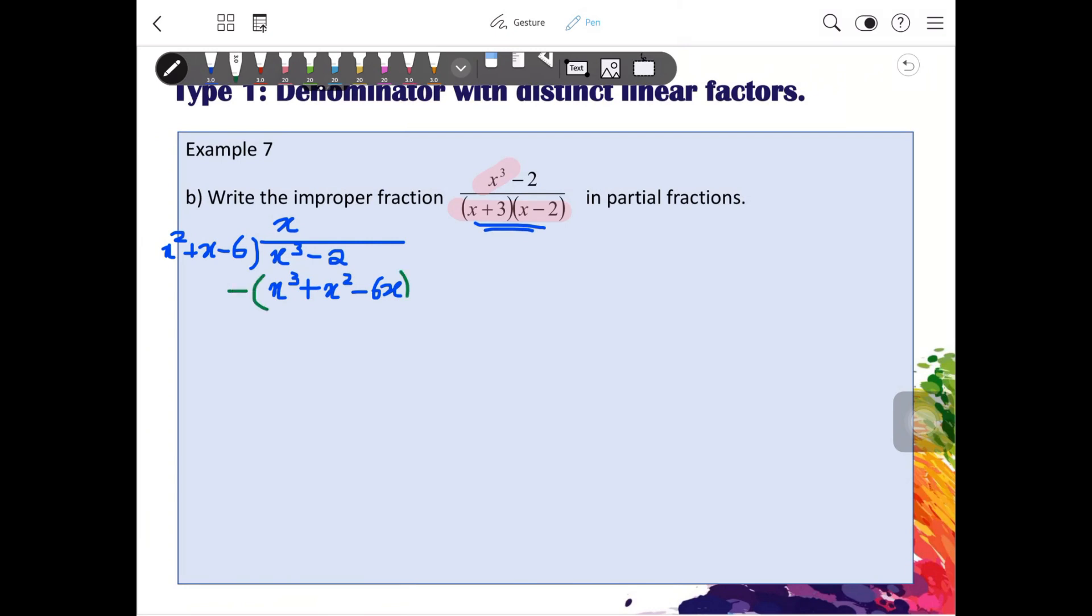Put a minus sign with a bracket. You will get negative x squared plus 6x, and then pull down the negative 2. You will get negative x squared plus 7x minus 2. And then you will do a negative sign with a bracket. So you will get 7x minus 8.